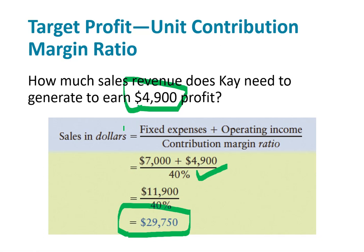To calculate either the break-even in sales dollars or number of units, or how many posters to sell for a $4,900 profit, or the required sales in dollars, it's a simple calculation. The formula for targeted profit uses fixed costs plus target operating income divided by either the contribution margin per unit or the contribution margin ratio.